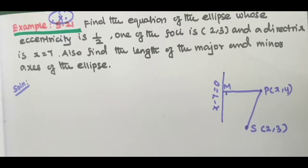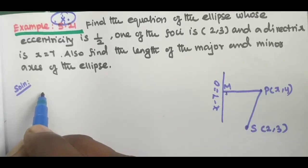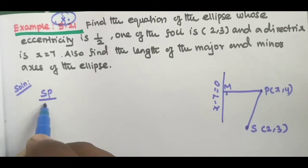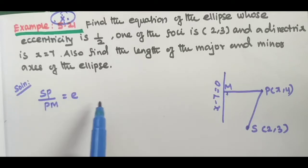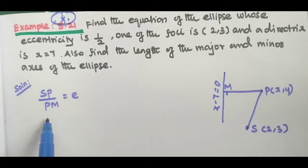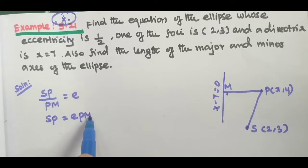So here we can write SP/PM = e. Therefore SP = e into PM.